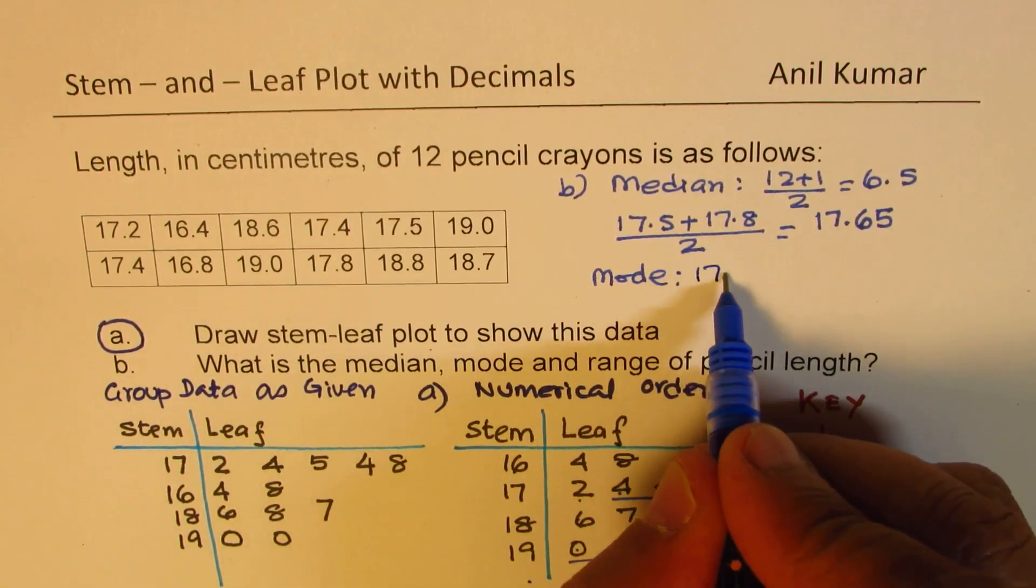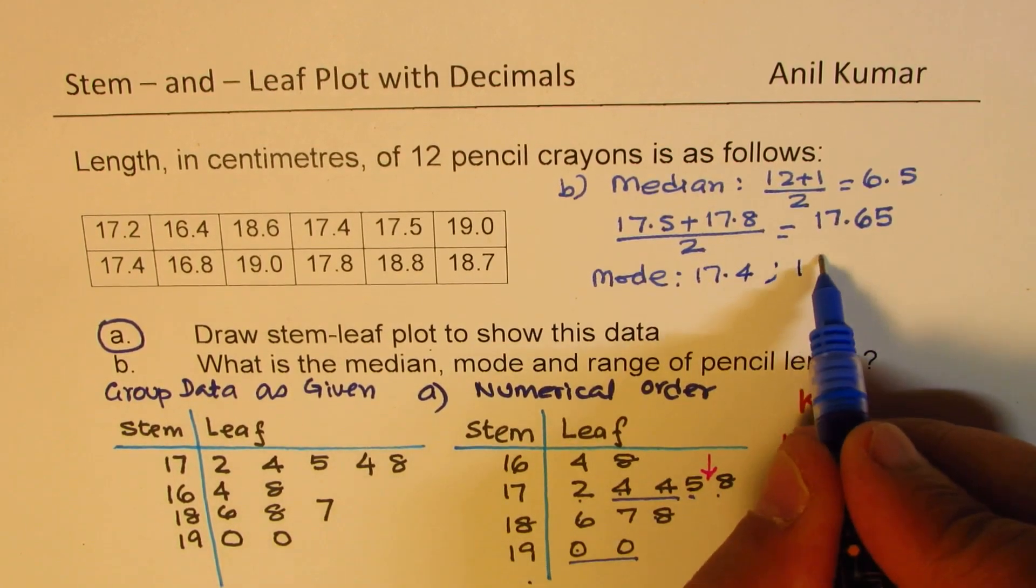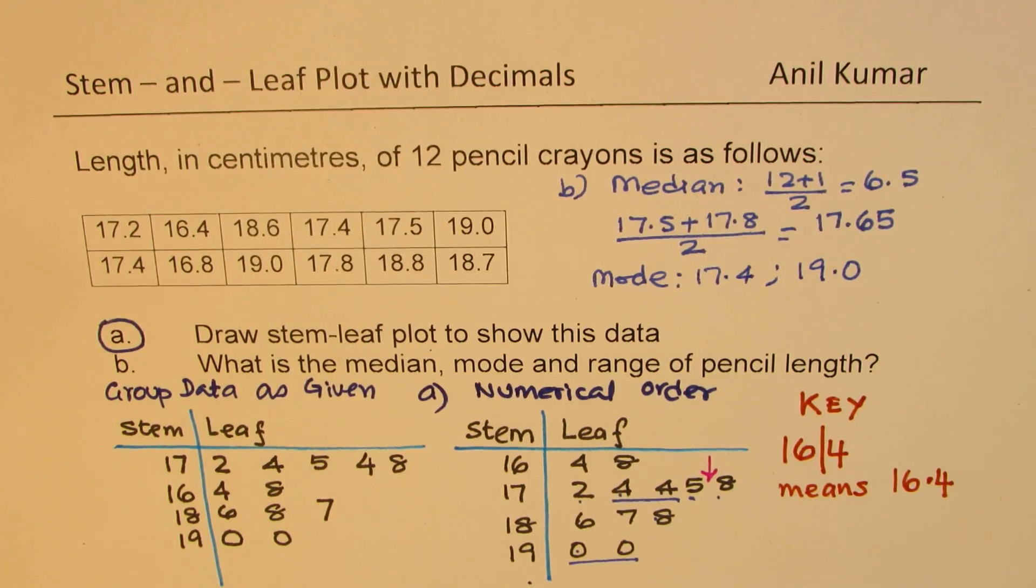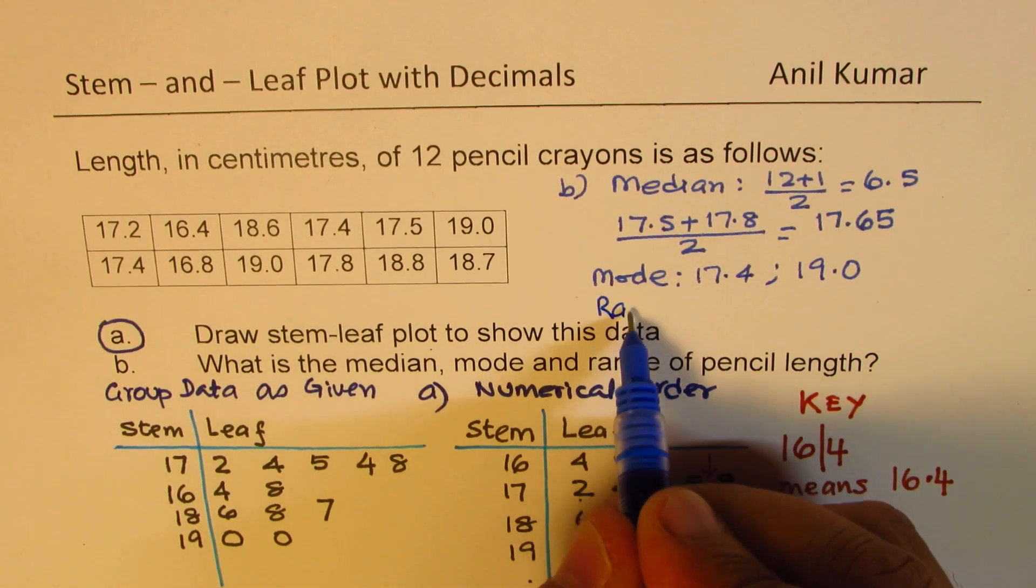So one of the mode here is 17.4. The other mode here is 19.0. So it has two modes in the given data. Perfect. The last thing here we need to find is the range.